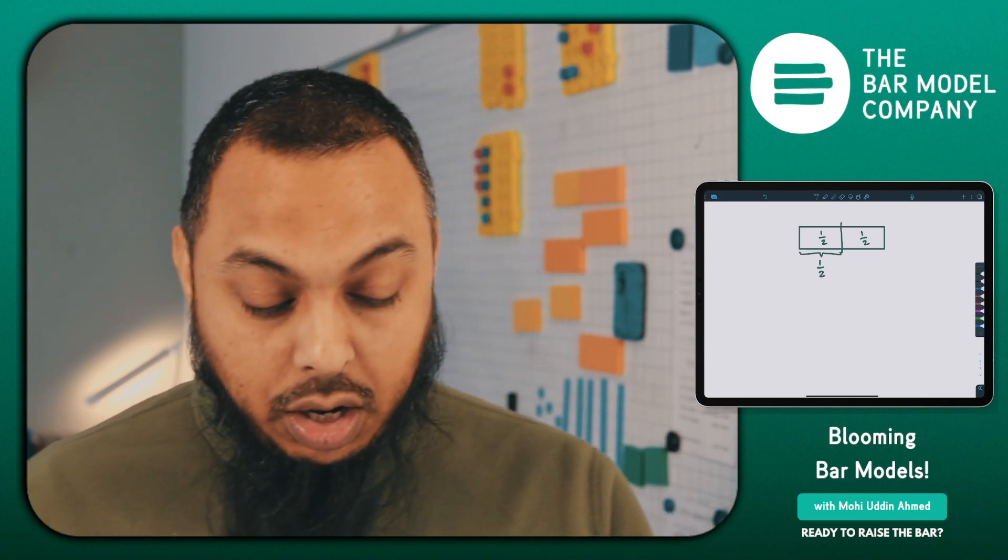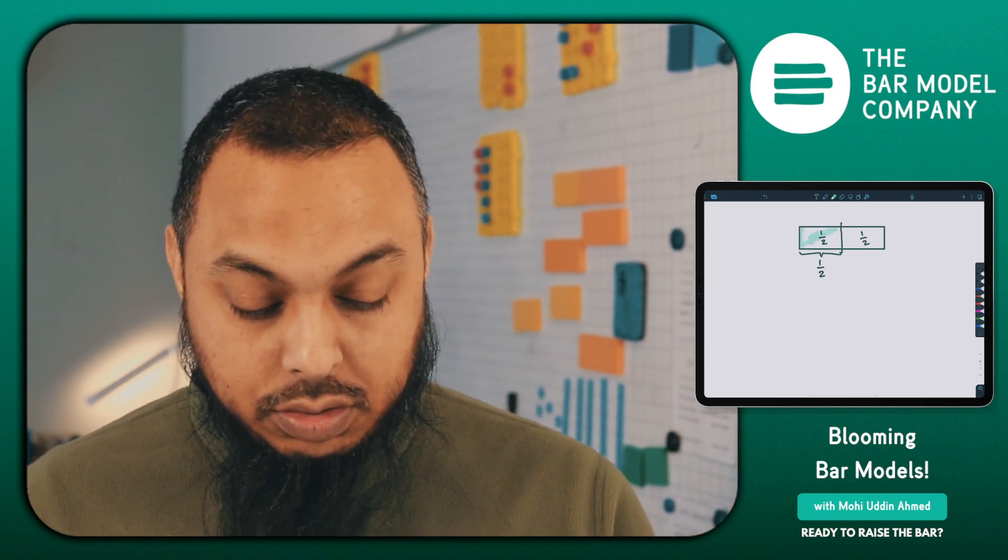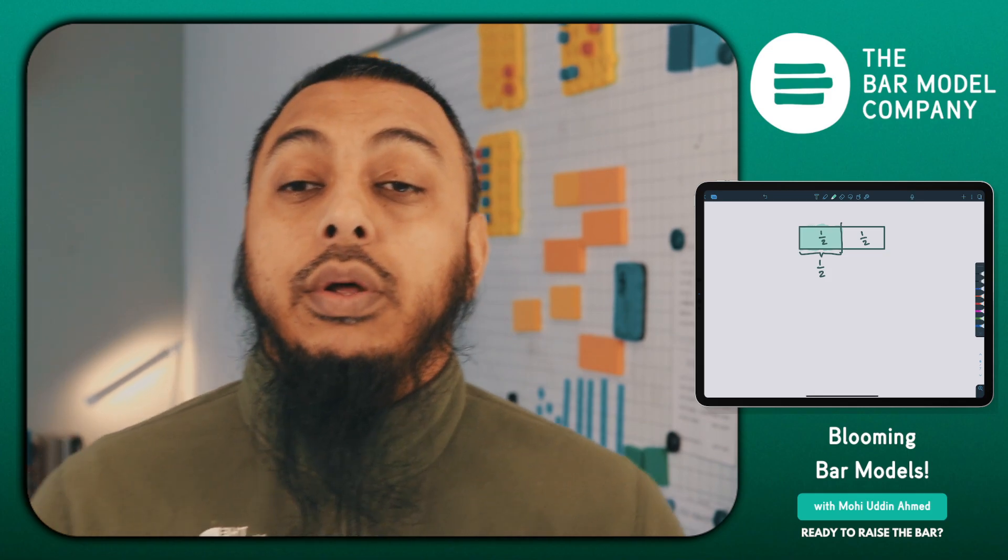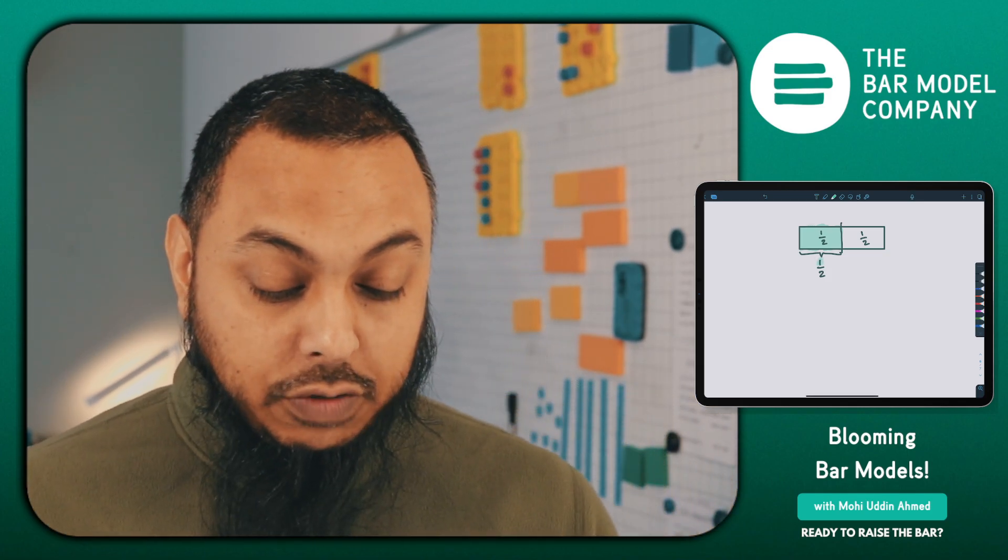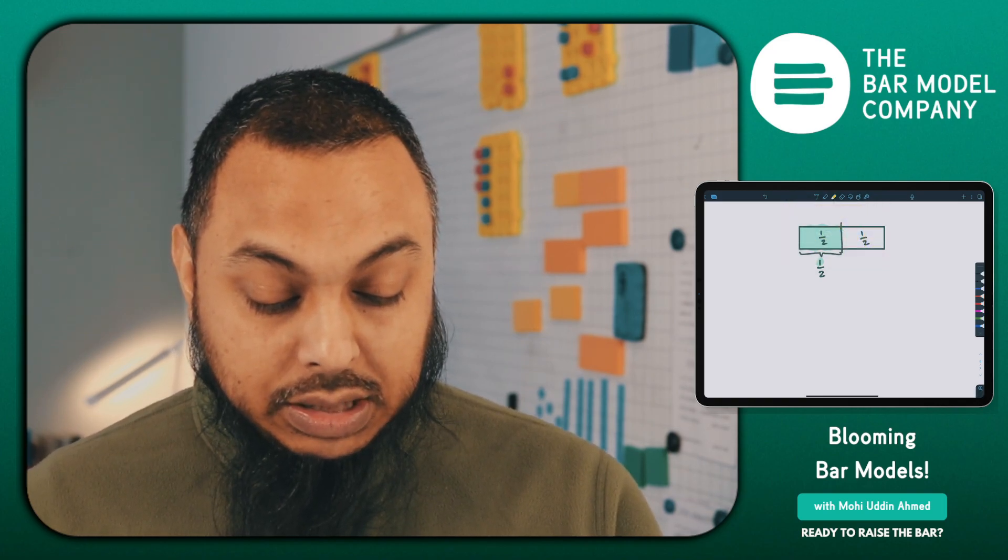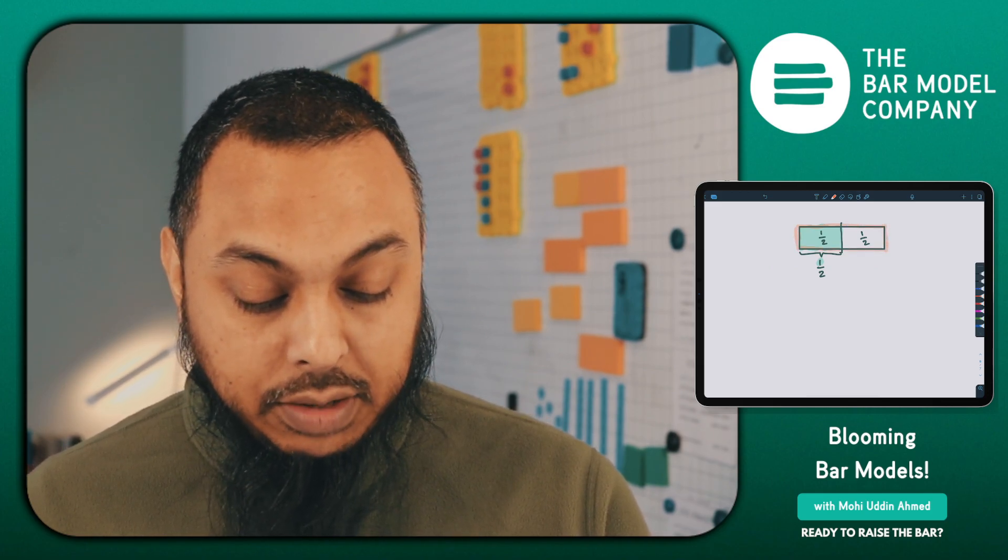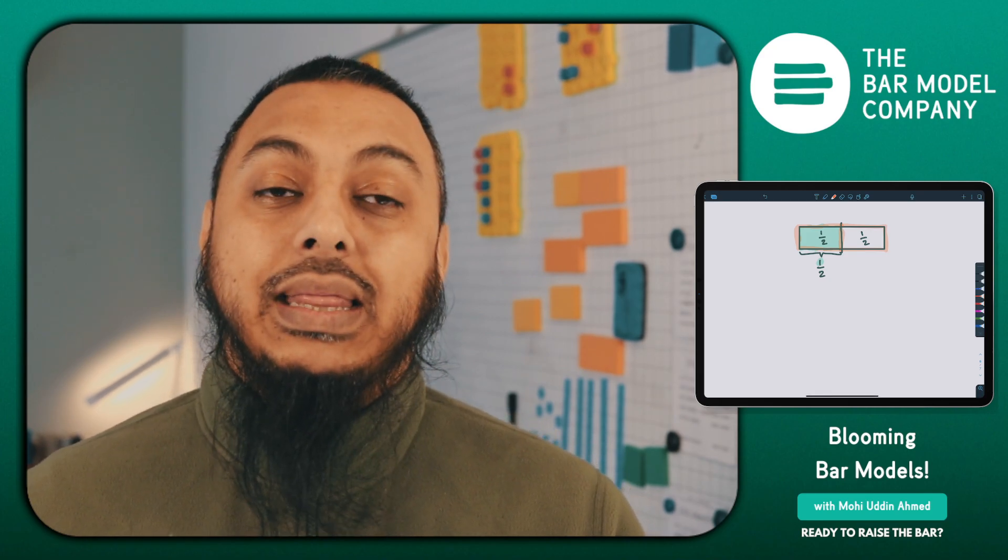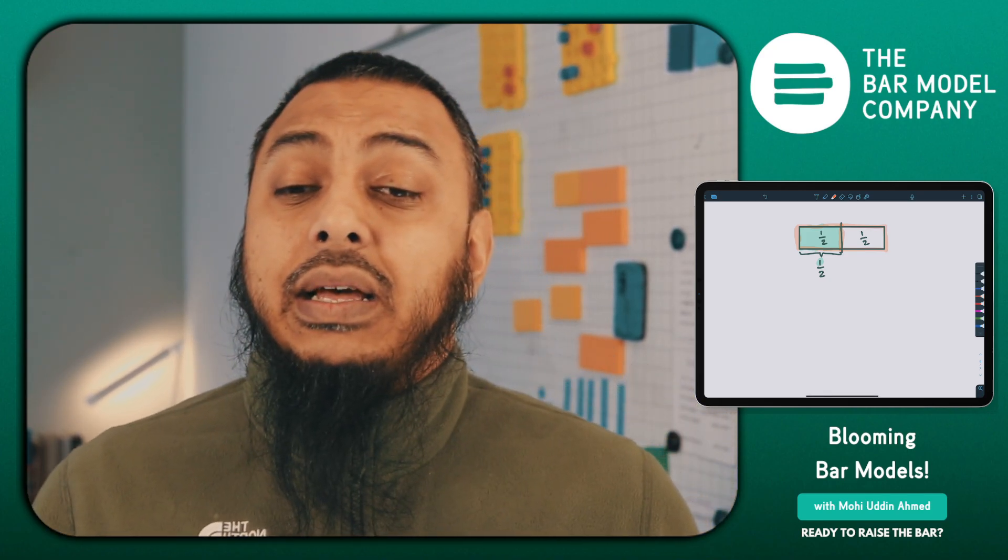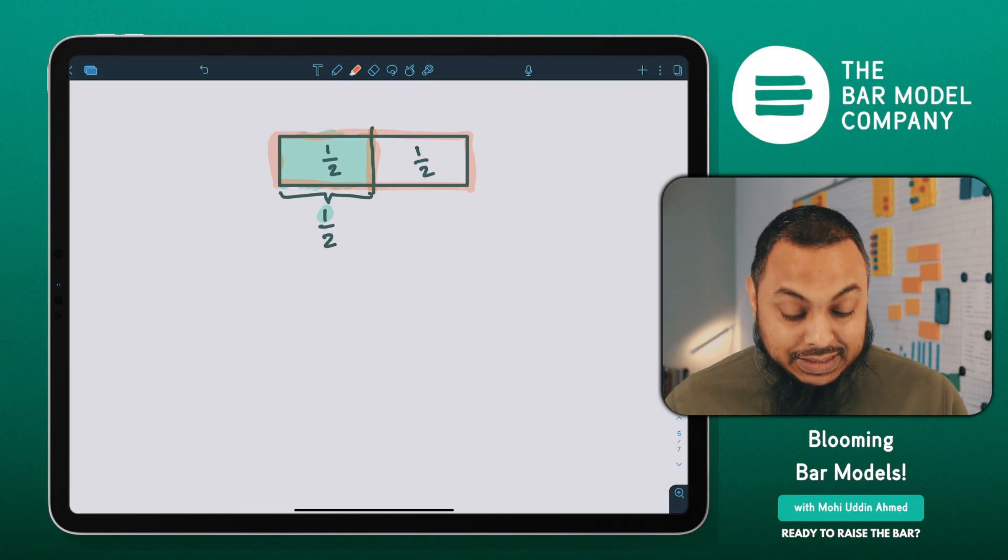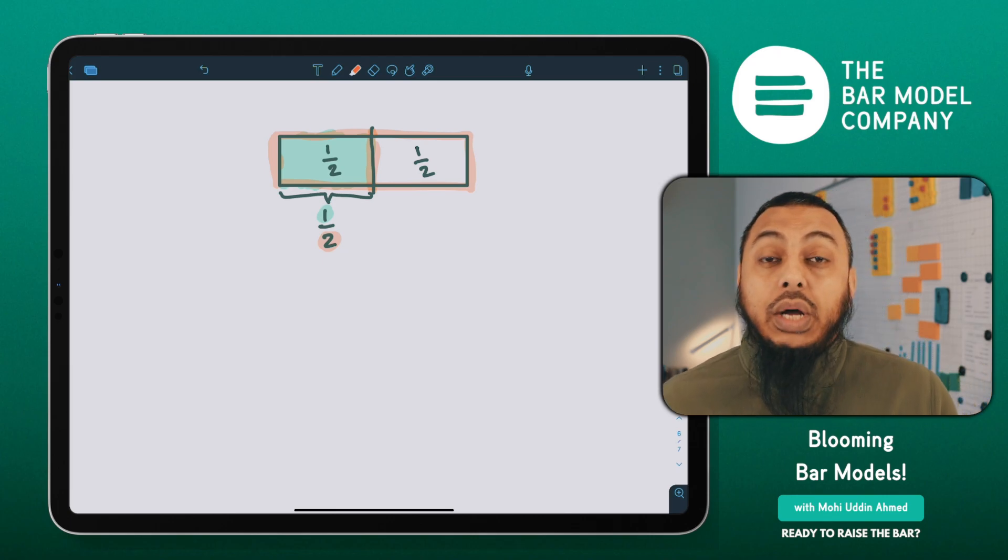We call this section a half because there are two equal parts, but there are two equal parts that make the whole. This is one out of the two equal parts. This is one part out of the two equal parts that make the whole. We can see the whole here. We've got two equal parts that make the whole, and the green shade, the section, is one out of the two equal parts and hence why we call this part a half.